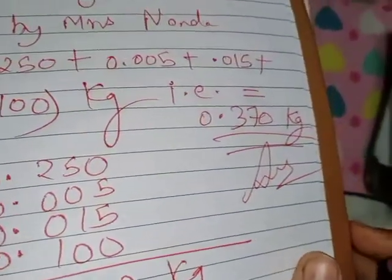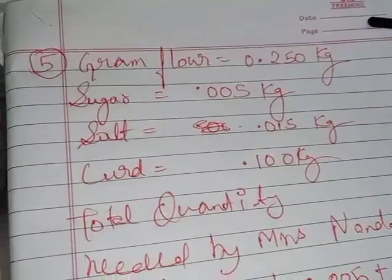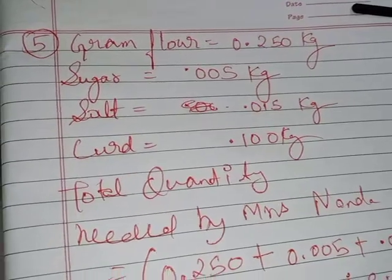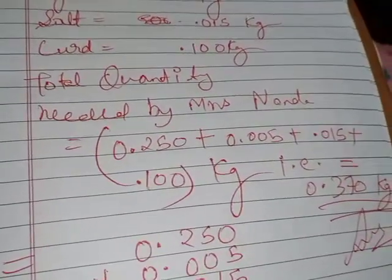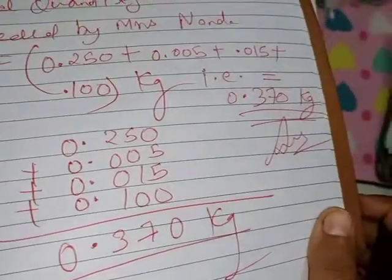Like this is the amount she needs to make the dhokla. Solution: first of all you will write whatever quantities are given in the question, and then noting down the question, and in rough you will do the addition, and then you will get the final answer.